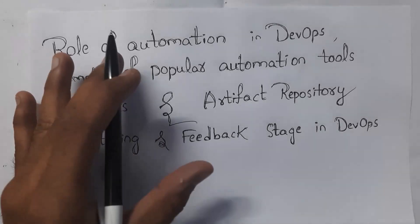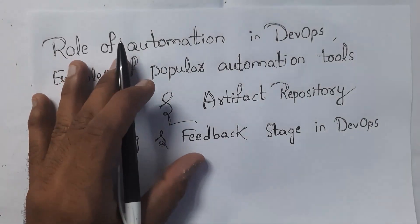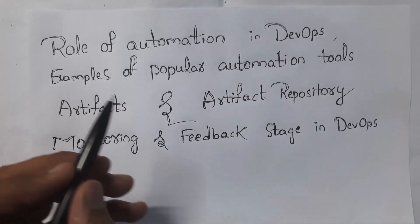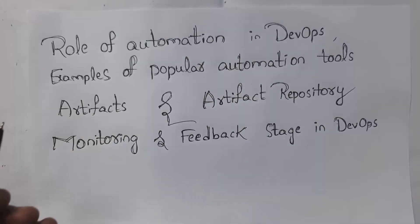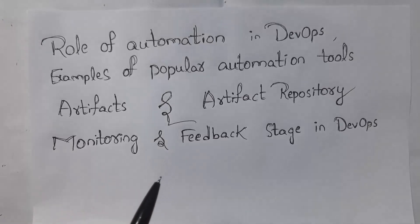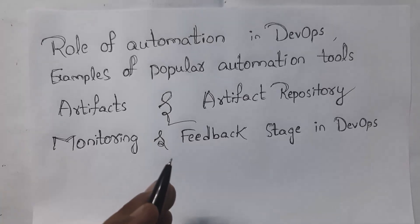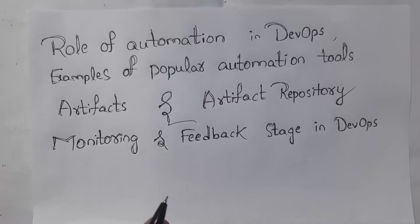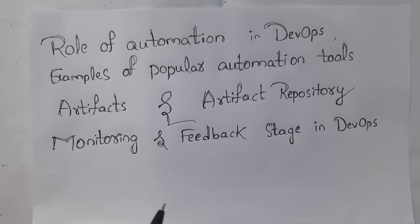Hi guys, welcome to my channel. In this video I will be covering the role of automation in DevOps, examples of popular automation tools, what are artifacts and what is artifact repository, and also I will explain the monitoring and feedback stage in DevOps. I have uploaded complete DevOps subject tutorials — the link is in the description. If you are watching this video for the first time, don't forget to like, share, and subscribe.